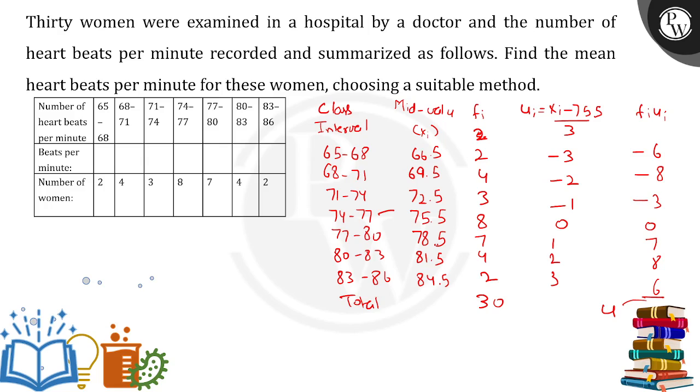Now class interval - this was divided by 3 because of the class interval. So class interval is 3, 68 minus 65. That is why we have to divide by 3. And why 75.5? This is lying exactly in between.